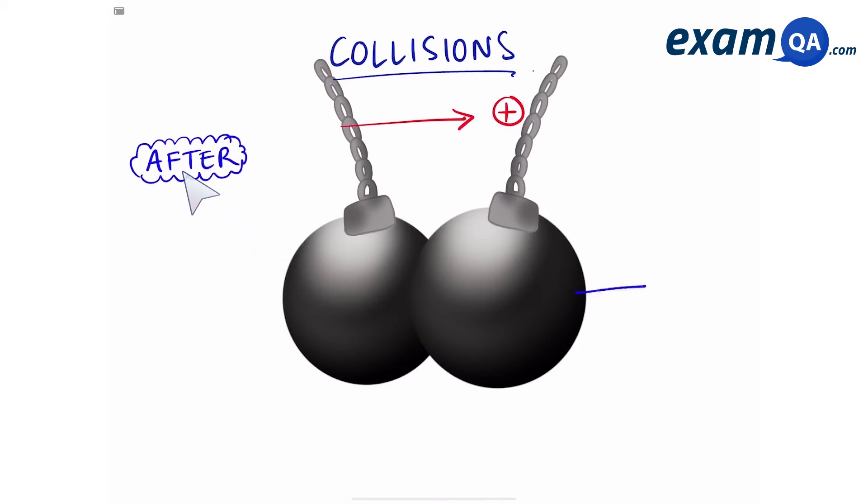We want to work out which direction these balls are going to move. Are they going to go to the right or are they going to move to the left? So basically, we want to know what their velocity will be. Now you can think of these balls as one single unit because they've come together. I'm going to write the formula momentum is equal to mass times by velocity.